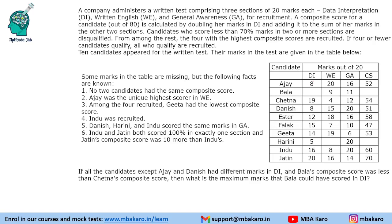Question 3 conditional: If all candidates except Ajay and Danish have different marks in DI, what is the maximum marks Bala could score in DI, given Bala's composite score is less than Chetna's (54)? Working backwards: total less than 54 with 20 in GA and WE means DI contribution less than 34 divided by 2, so DI less than 17. Testing 13 in DI: 26 + 20 + 20 = 66 — wait, composite is 26 + 20 = 46, possible. So maximum Bala can score in DI is 13 marks.